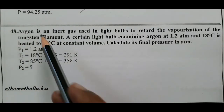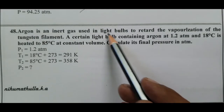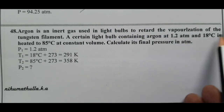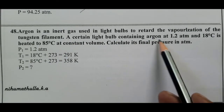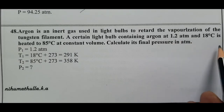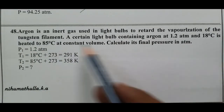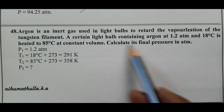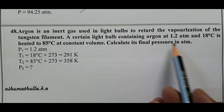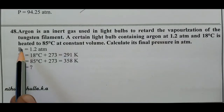Question number 48. Argon (Ar) is an inert gas, atomic number 18, used in light bulbs to retard the vaporization of the tungsten filament. A certain light bulb contains argon at 1.2 atm and 18 degree Celsius. It is heated to 85 degree Celsius at constant volume. Calculate its final pressure.